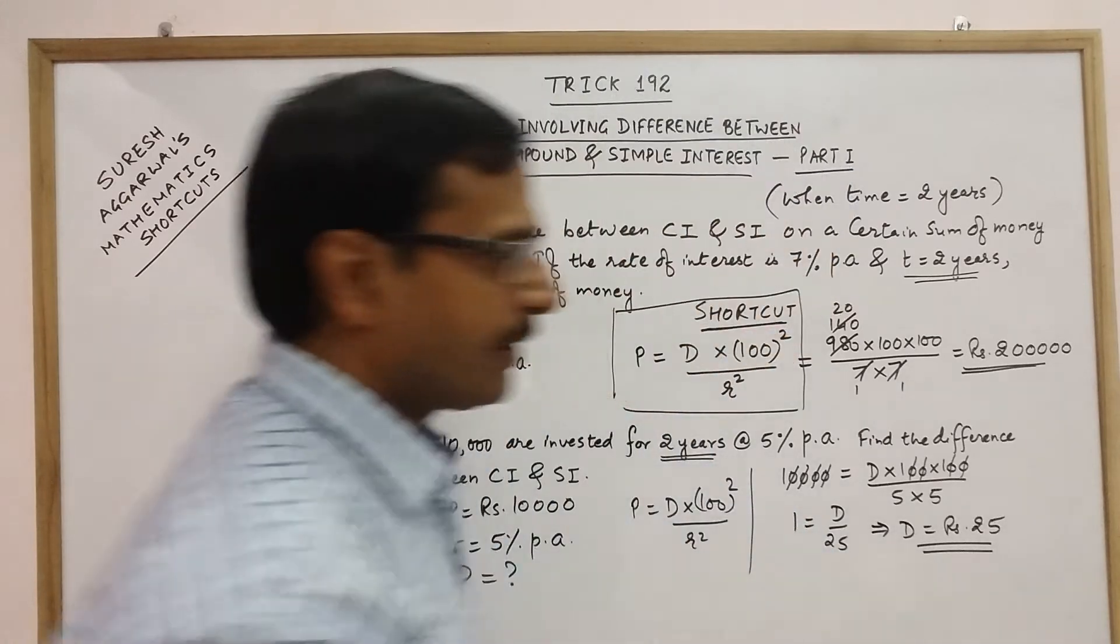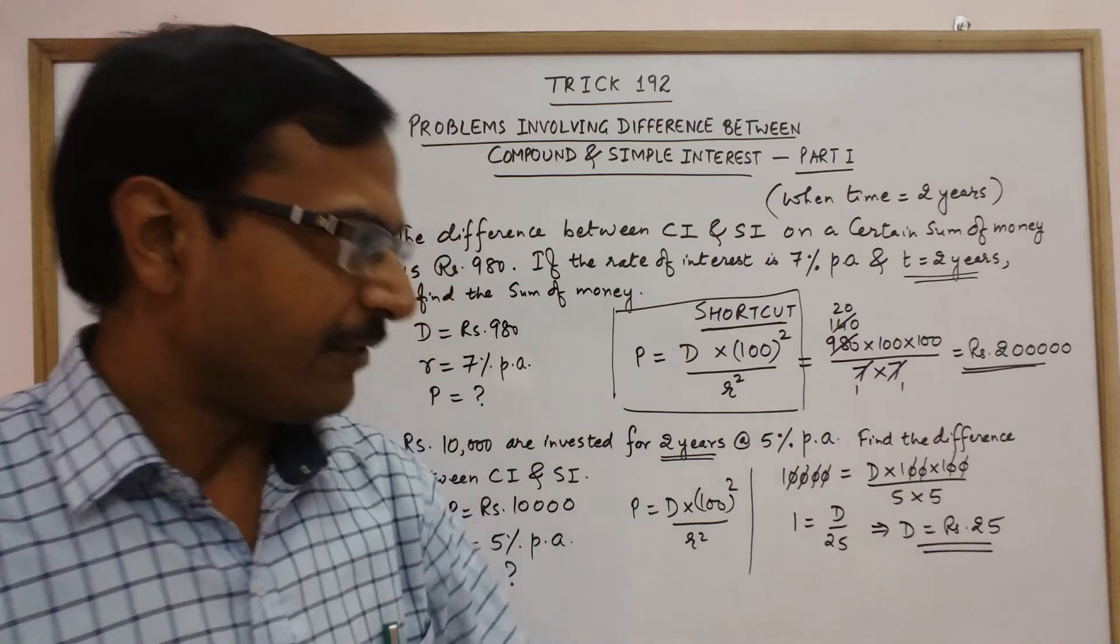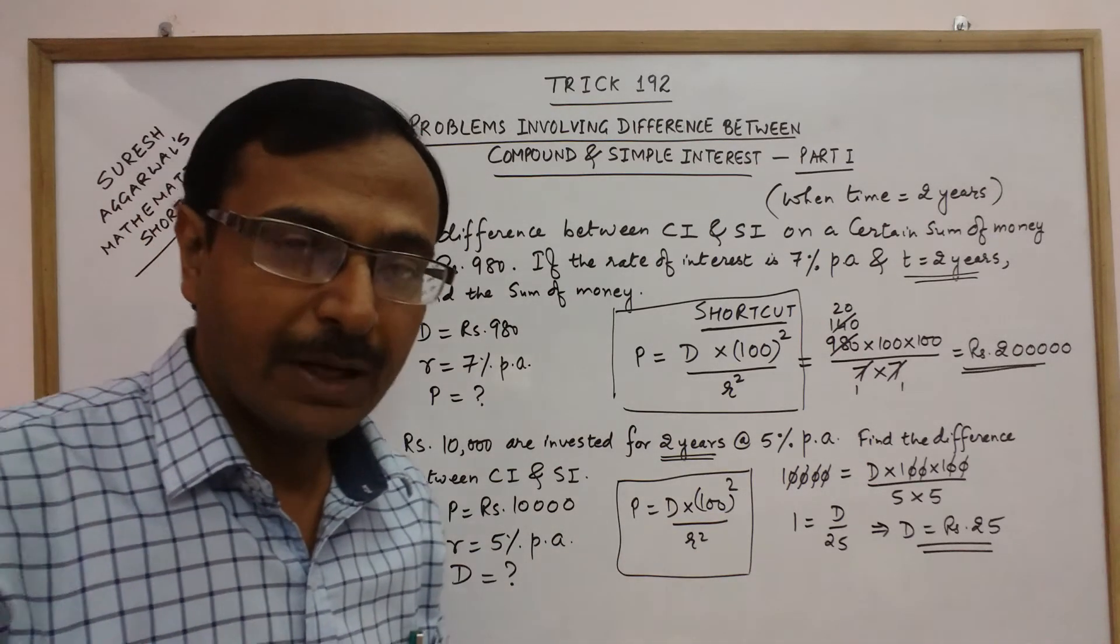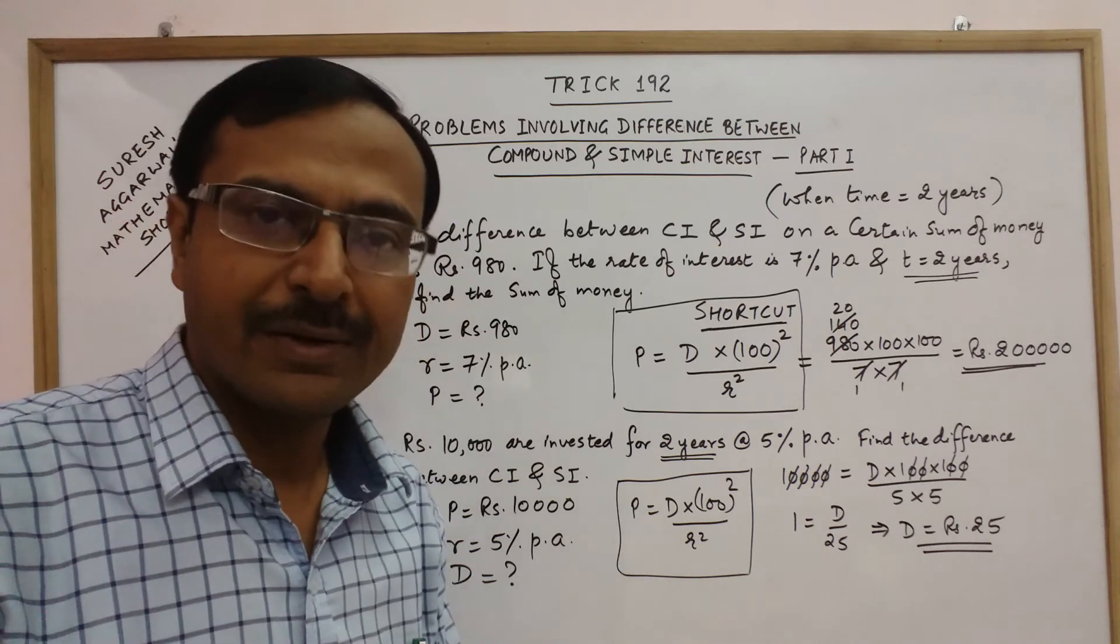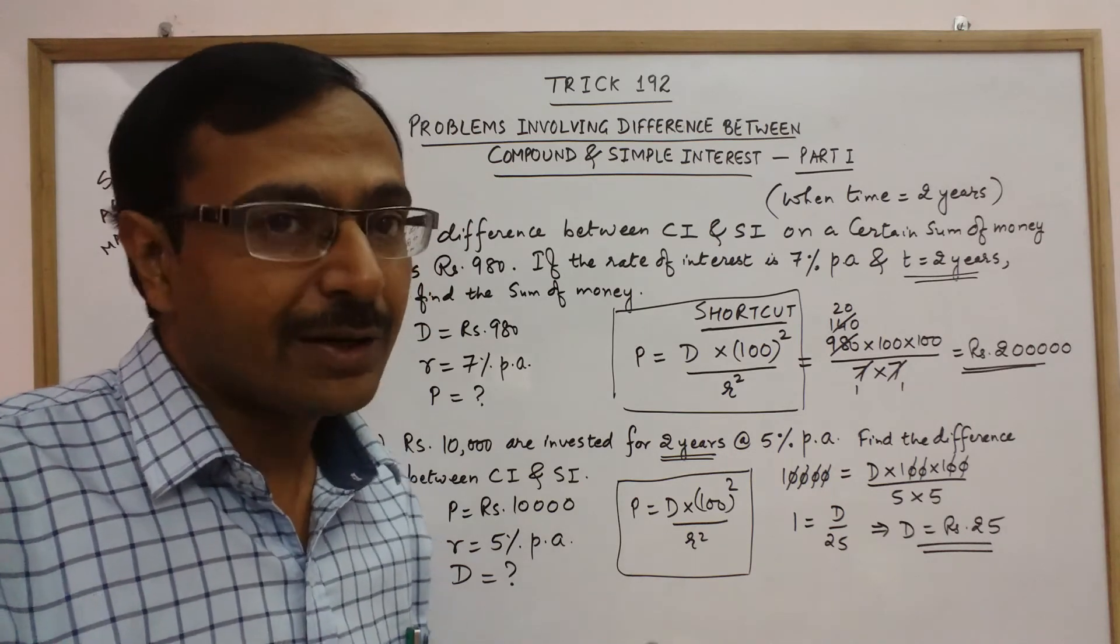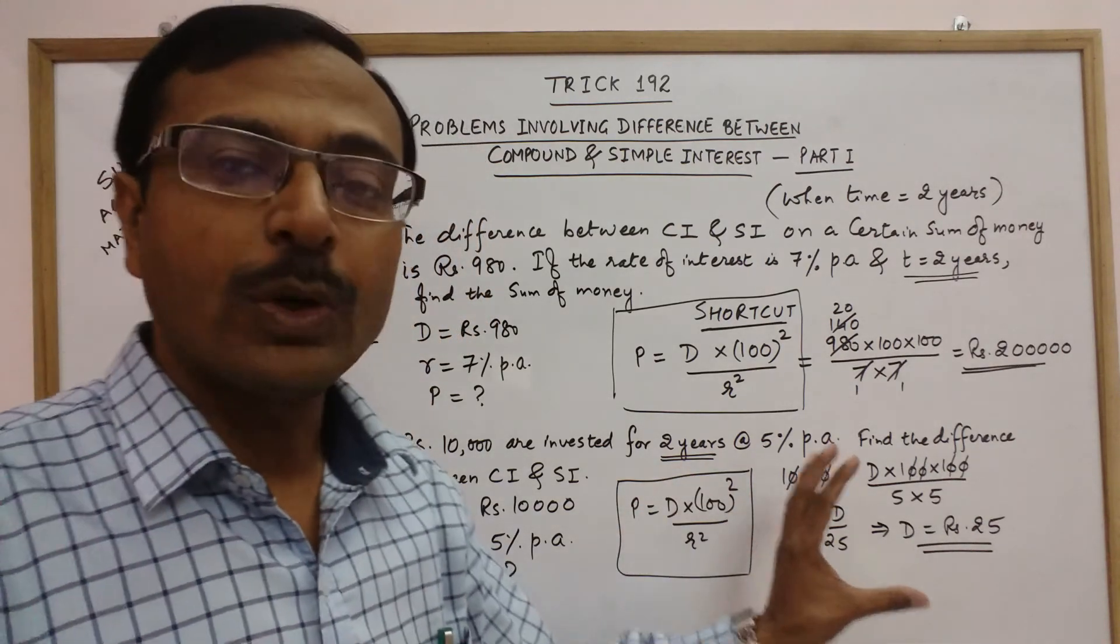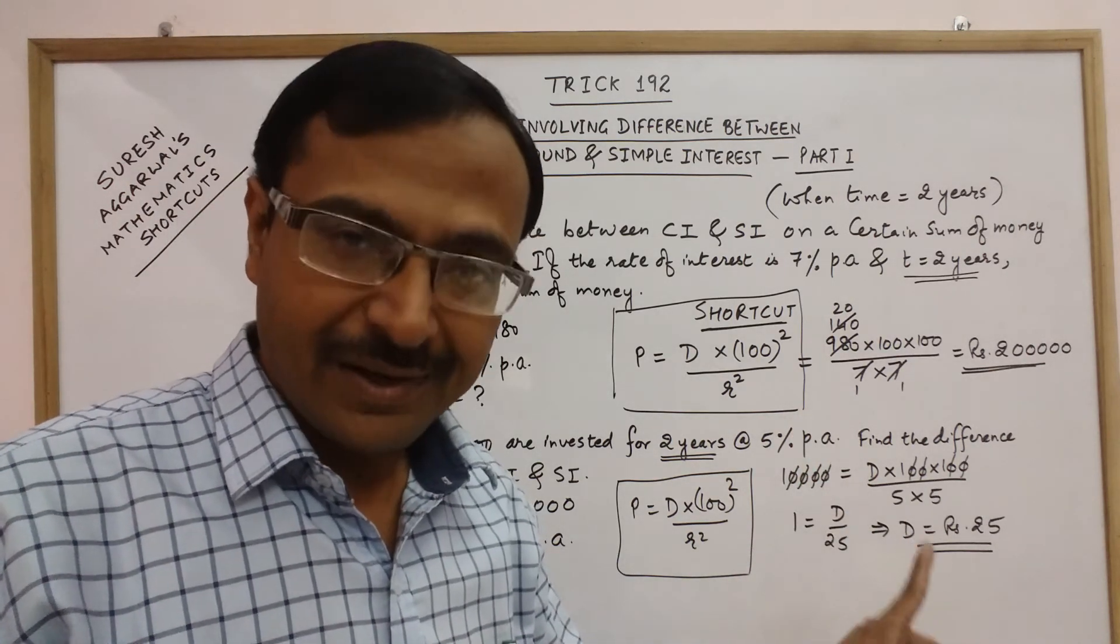So directly the difference between compound interest and simple interest will be rupees 25. If you calculate compound interest separately, then you have to apply lengthy formulas of finding the amount first, that is P into 1 plus R by 100 raise to power 2, then subtract A and P to get the compound interest, then find the simple interest using PRT by 100, then find the difference.